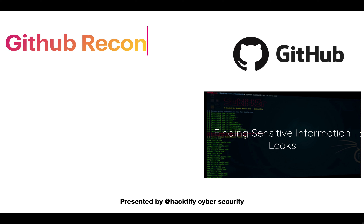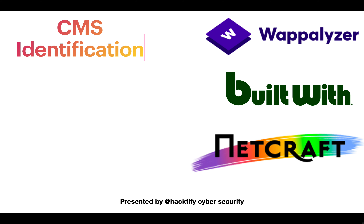In the GitHub recon section, we will see how to identify underlying API keys or sensitive information in GitHub repositories. Next, in the CMS identification section, we will use tools like Wappalyzer, BuiltWith, and Netcraft to identify underlying technologies, and check for outdated software versions that may be vulnerable to exploitation.